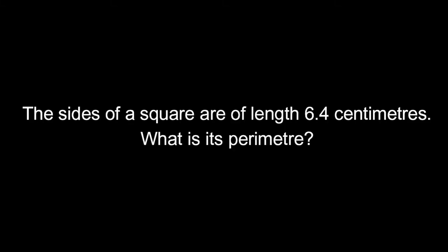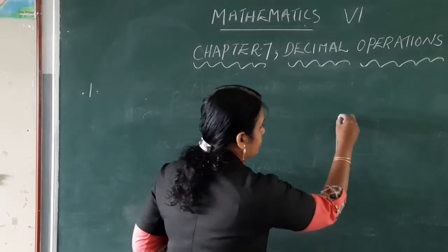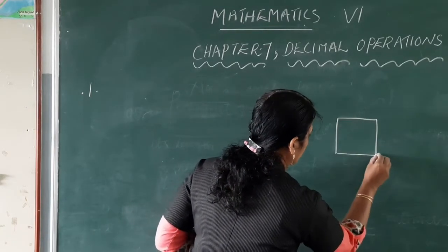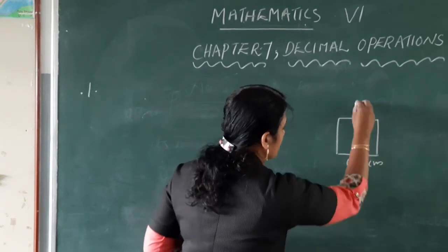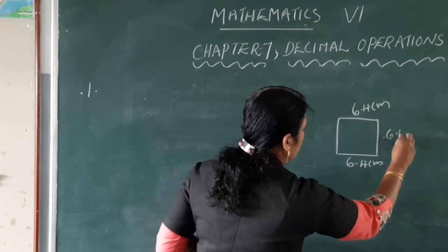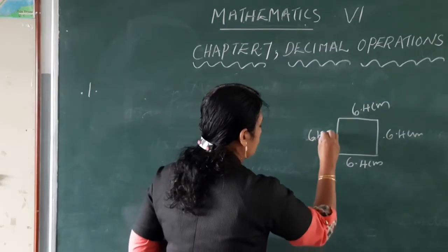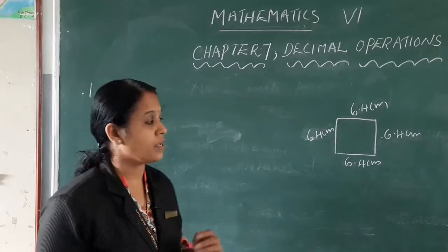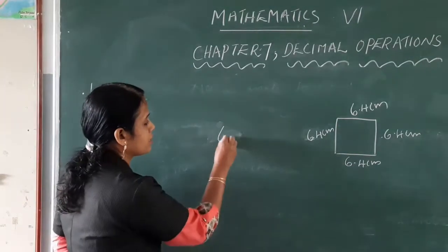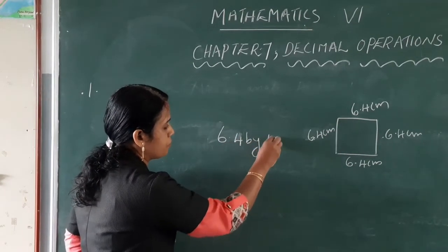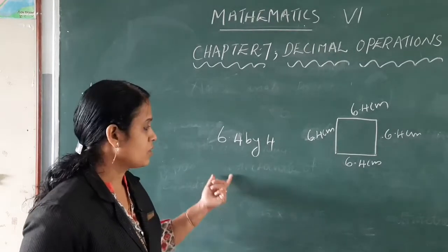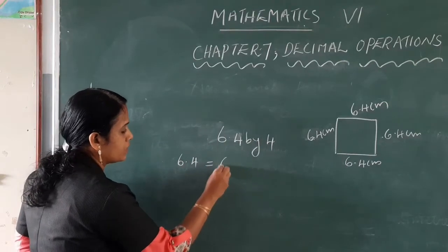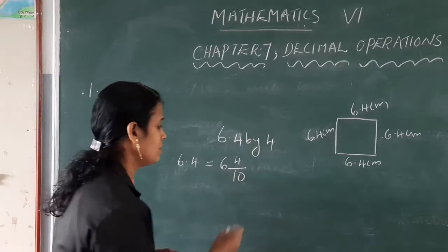Next question: the sides of a square are of length 6.4 centimetres. So the square has each side equal to 6.4 centimetres, 6.4 centimetres, 6.4 centimetres, 6.4 centimetres — all sides are equal. To find the perimeter of the square, we multiply 6.4 by 4. Here, 6.4 is equal to 64 divided by 10.